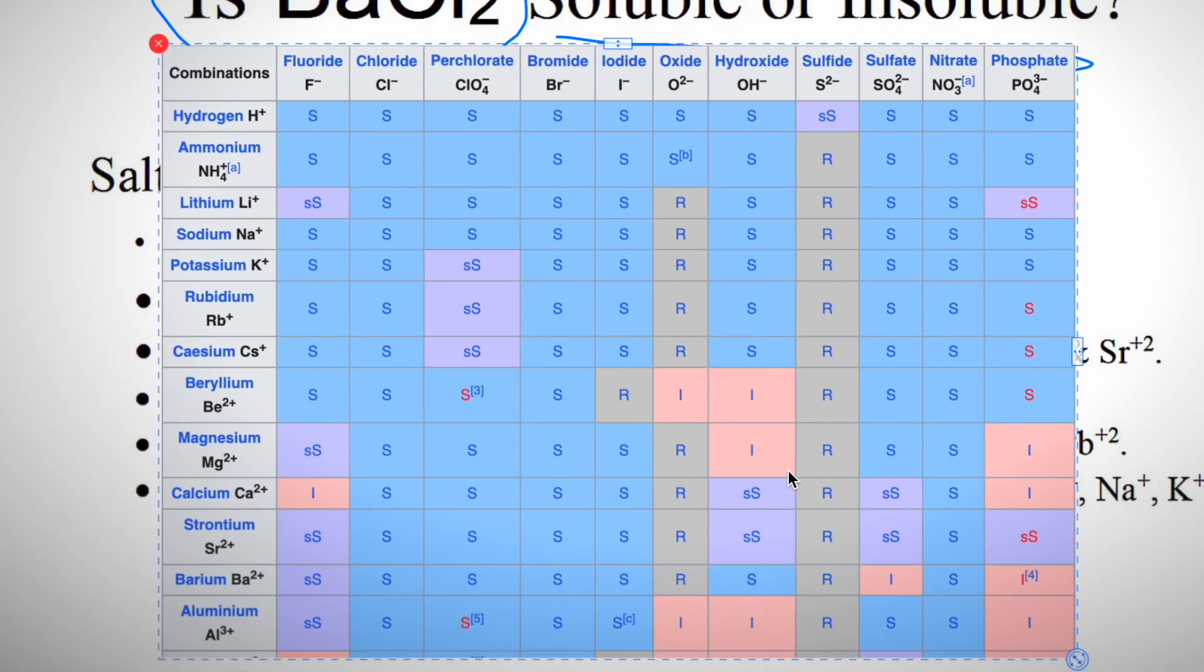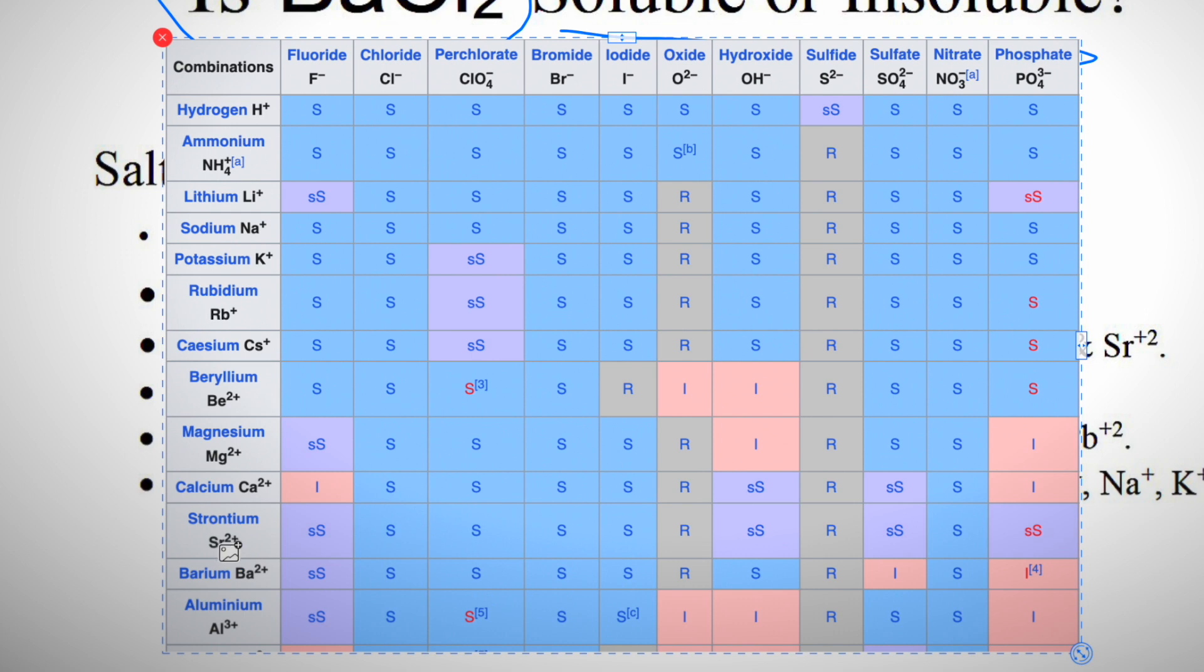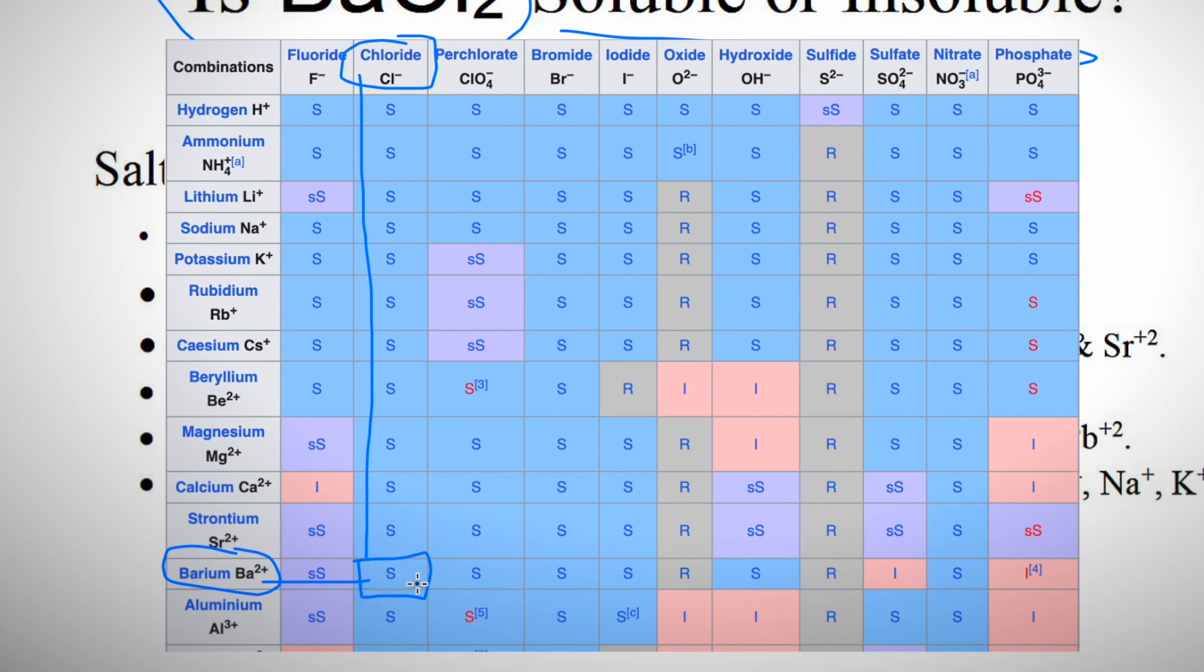first try to find out the barium. This is barium. So if we draw a line from barium like this and from chloride ion, here is a chloride ion, like this down, then we will get S. This S means it is soluble in water.